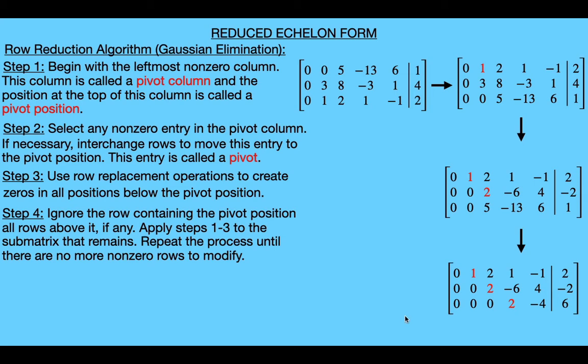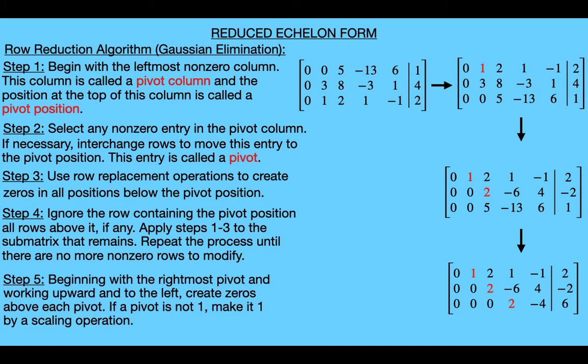There is one step left in the algorithm. Step five transforms the echelon matrix into a reduced echelon matrix. We start with the rightmost pivot and then, working upwards and to the left, we create zeros above each pivot. Also, if a pivot is not one, we scale it to one by multiplying the row containing the pivot by some non-zero constant.